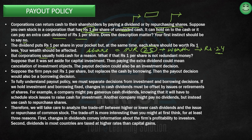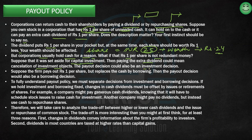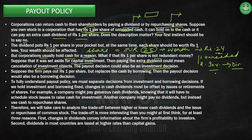If the corporation doesn't release dividends and holds the cash, that one rupee stays with them. But if that money can be utilized for capital investment and we give dividends instead, then we can't make that investment. At that point, the payout decision becomes an investment decision. If the money is truly unneeded, it doesn't matter. But if it's being diverted from an investment, then declaring a dividend is effectively making an investment decision.